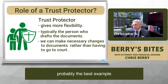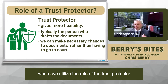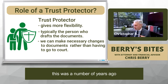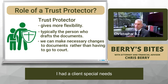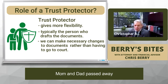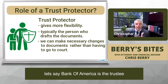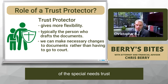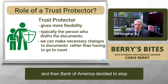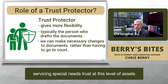Probably the best example where we've utilized the role of the trust protector — this was a number of years ago. I had a client with special needs. We set up a special needs trust. Mom and dad passed away, and we had named Bank of America as the trustee of the special needs trust. Then Bank of America decided to stop servicing special needs trusts at that level of assets.